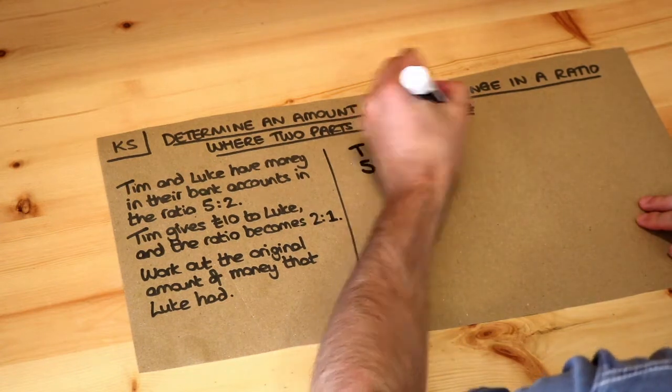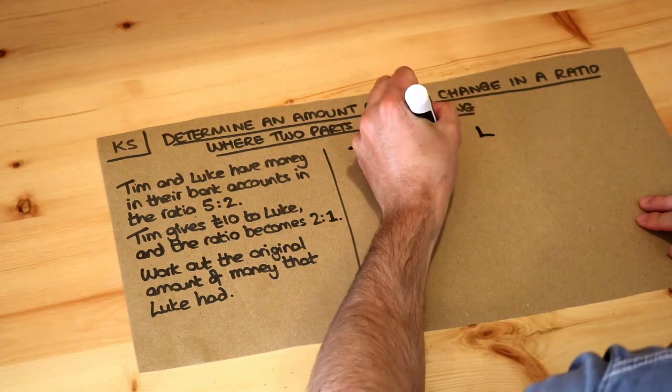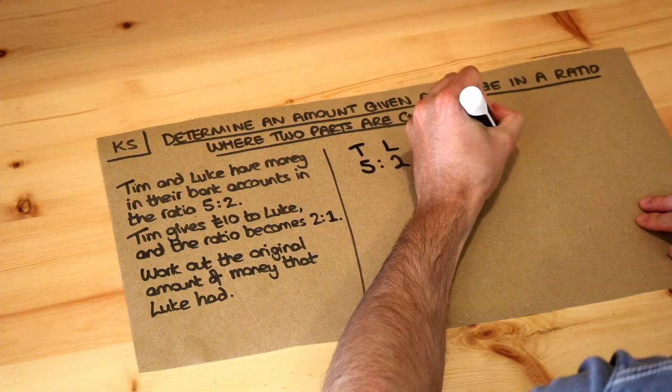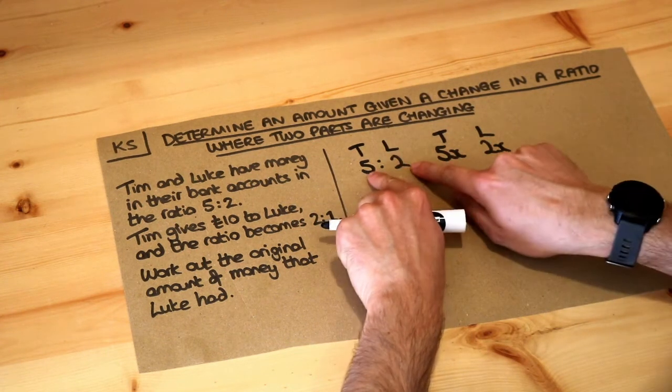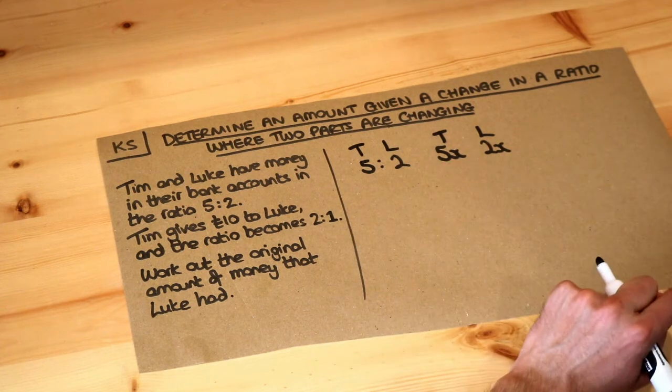Well believe it or not we can make the quantity that each person had 5x and 2x. So if two things are in the ratio 5 to 2, you can just put an x on the end to say how much money each of them had.